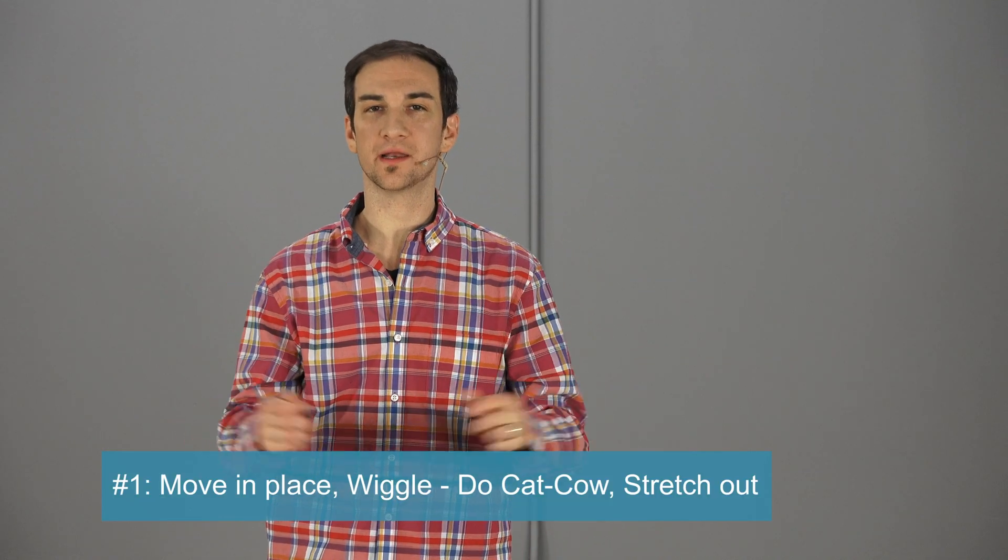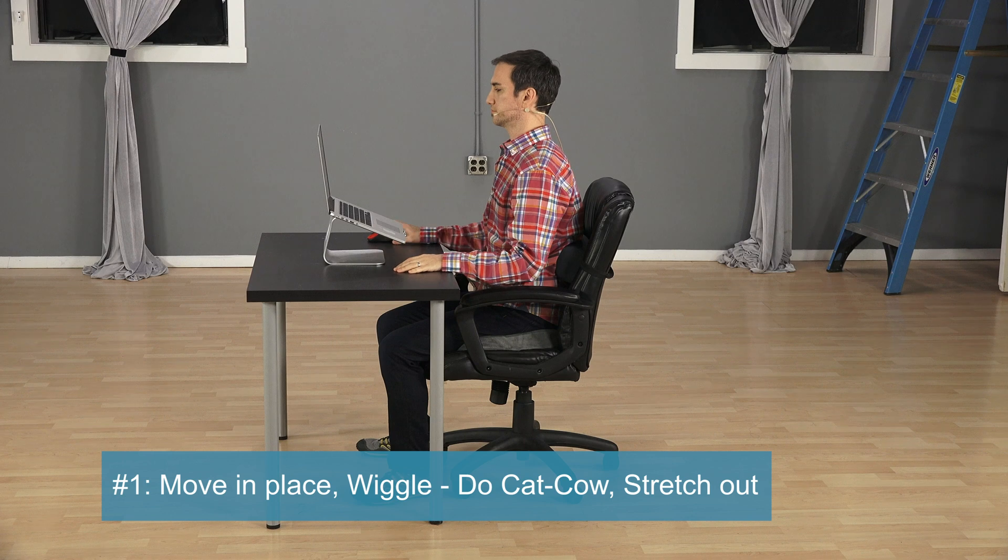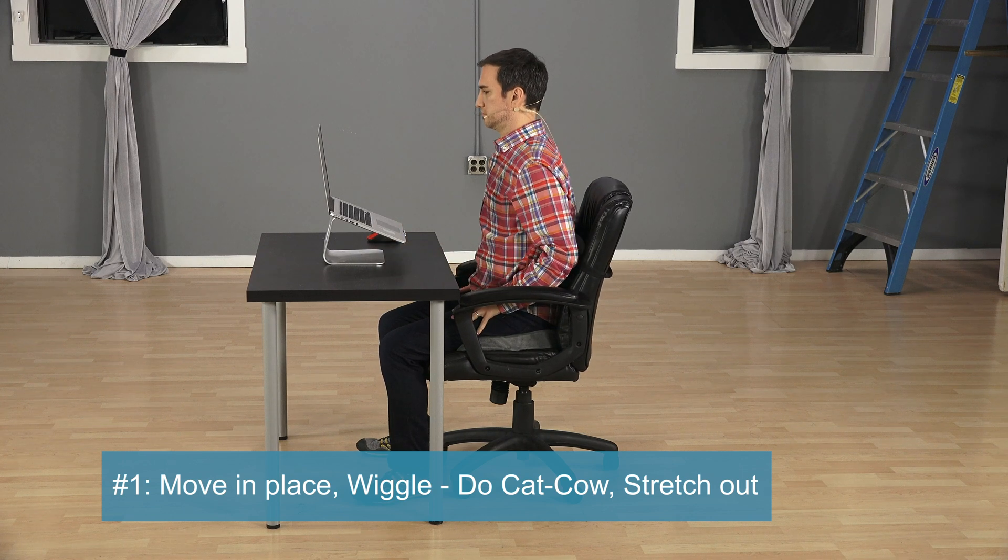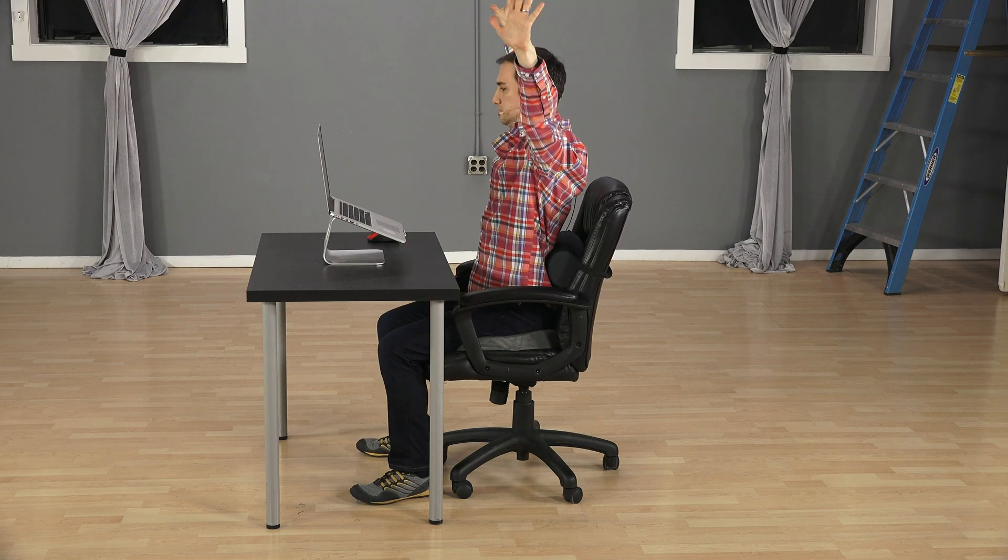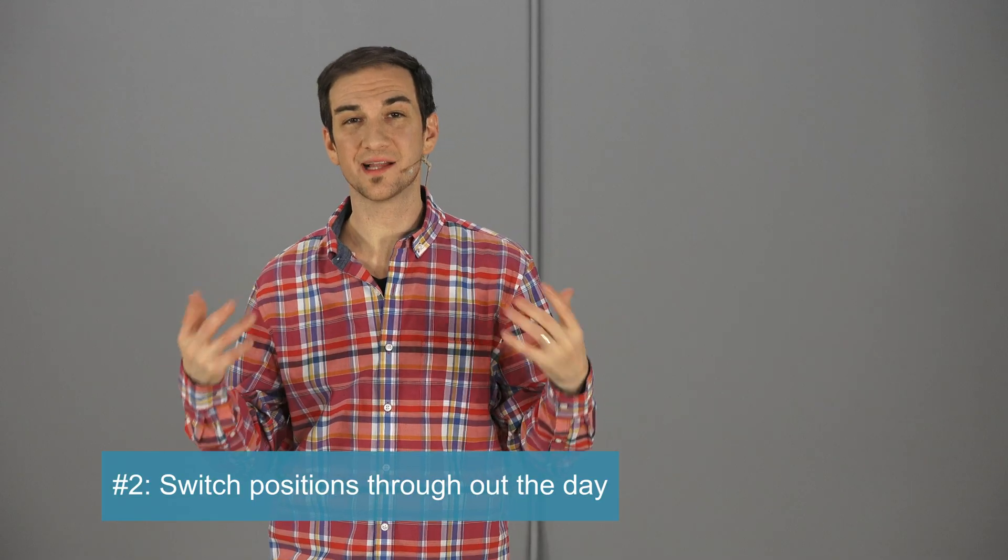The first one is simply just move in place. As you're sitting down just start moving, do the cat and cow, stretch out your arms, wiggle in place. That's already going to go a long way from just sitting in a static position for too long.